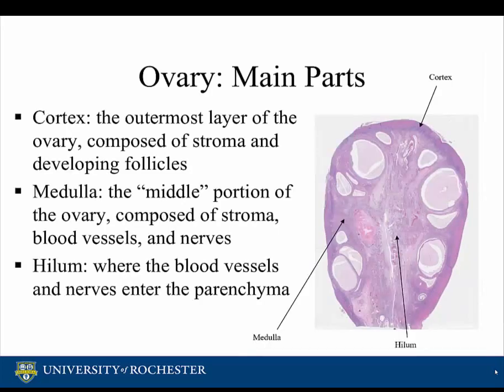The ovary has three main parts: the cortex, the medulla, and the hilum. The cortex is the outermost layer of the ovary, composed of stroma and developing follicles. The medulla is the middle portion of the ovary, composed of stroma, blood vessels, and nerves. This video will primarily discuss the cortex and the medulla. The hilum is where the blood vessels and nerves enter the parenchyma.